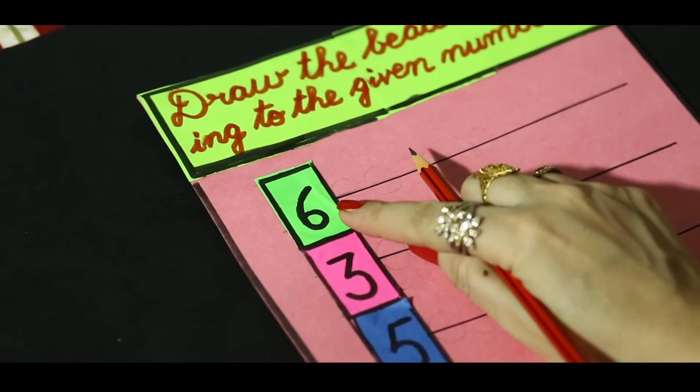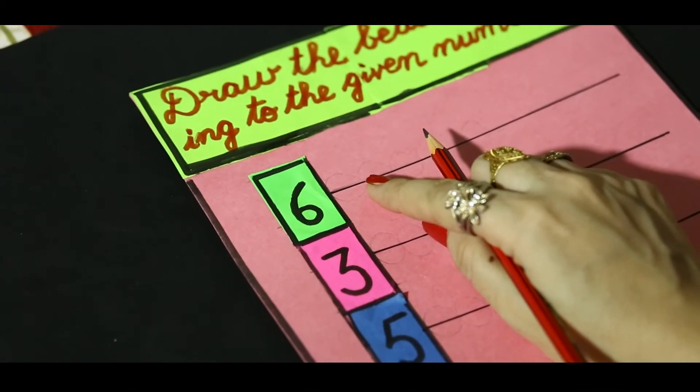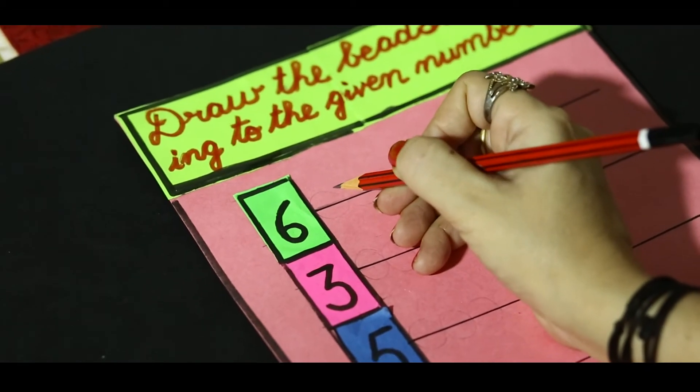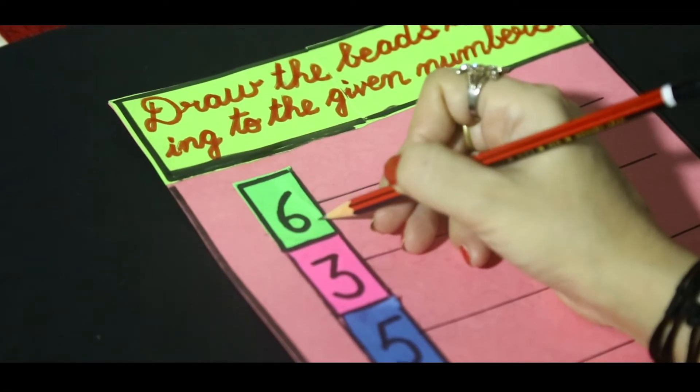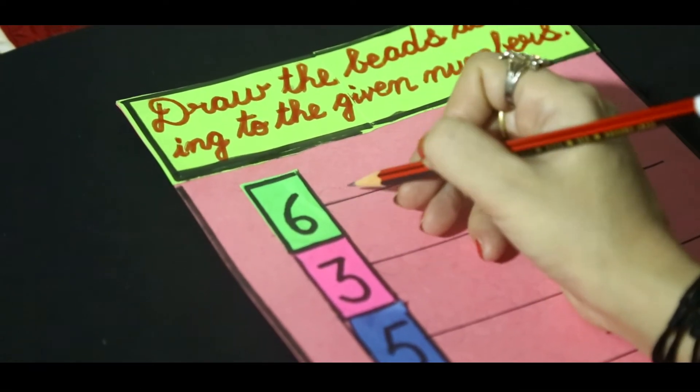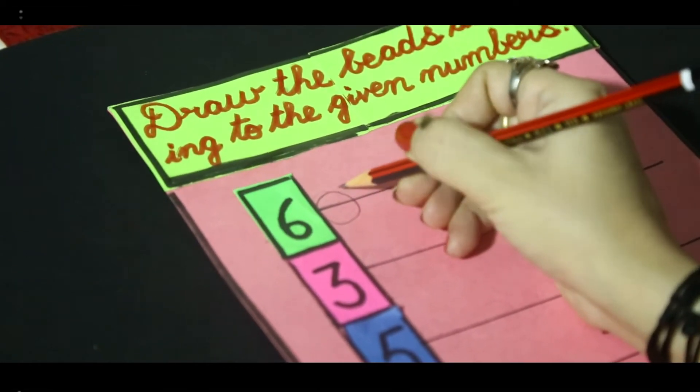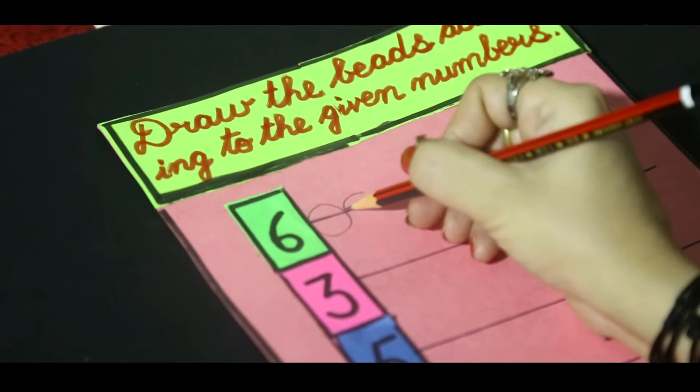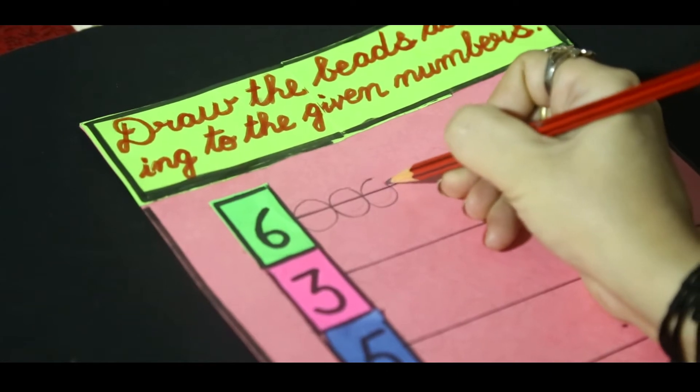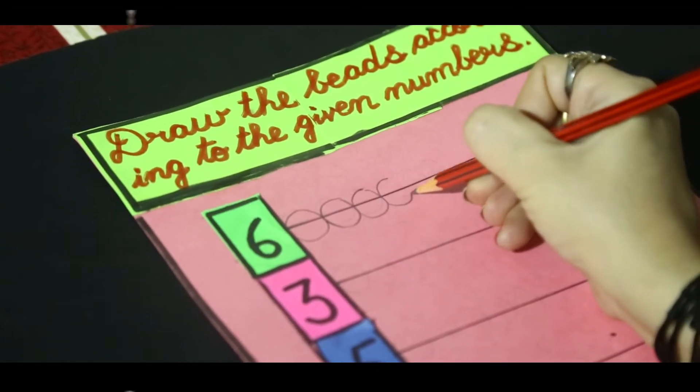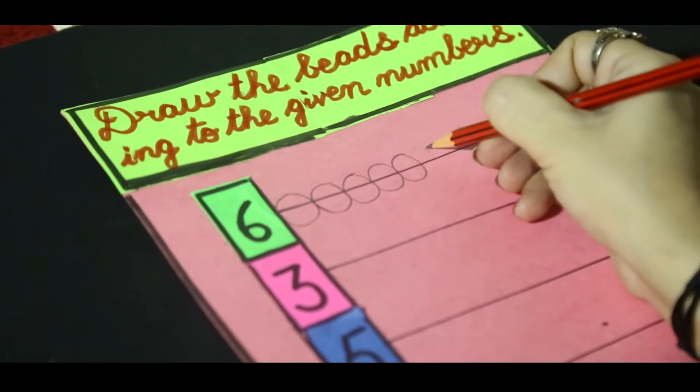Our first number is 6. So, how many beads I will draw? I will draw 6 beads. You have to count the beads also. Our first number is 6. So, I will draw 6 beads. Let's start. 1, 2, 3, 4, 5, 6.